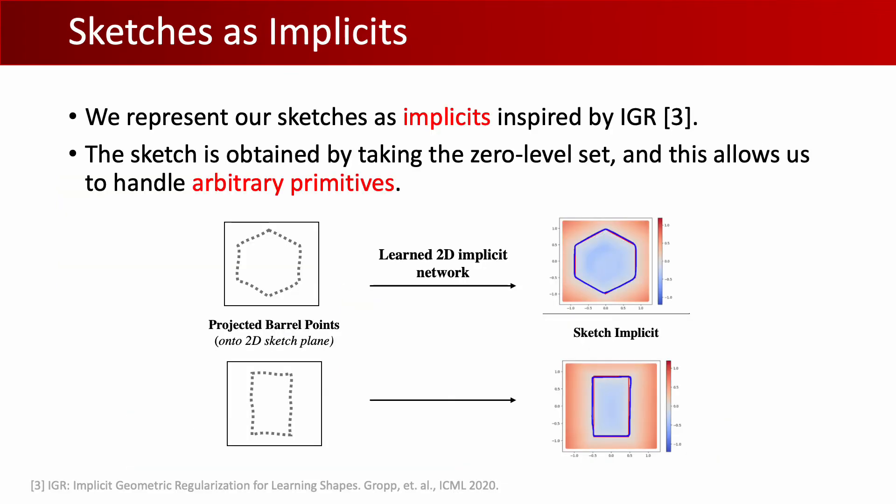For sketches, we project all barrel points for each segment onto the 2D sketch plane using the corresponding derived extrusion axis. The 2D projected point cloud is then fed to an implicit network similar to IGR, and the sketch loop is obtained by taking the zero level set of the output implicit. This representation allows us to handle arbitrary primitives as it can represent any closed loop. More details of our approach are found in the full paper.